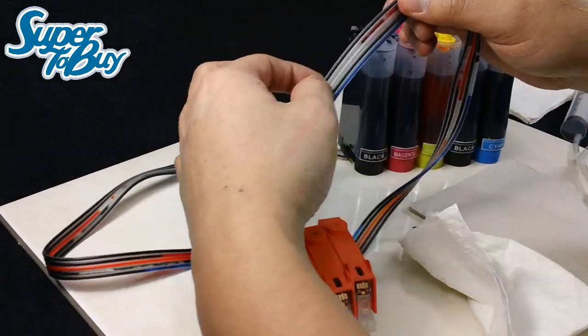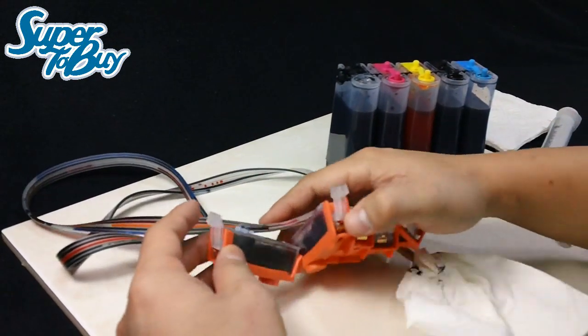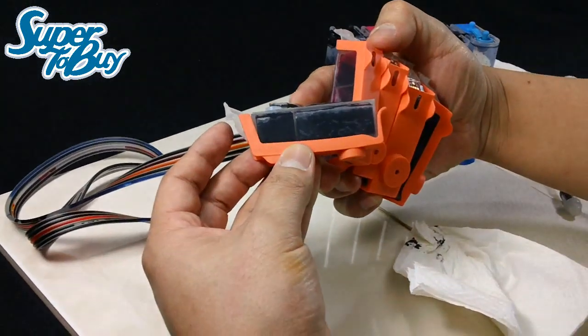This black line right here is all full and all primed for the black cartridge, and the black cartridge right here is full.